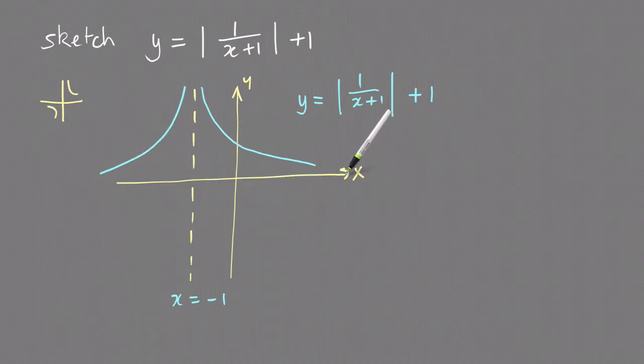So I'll do that for you now. Move the graph up 1, which means that the asymptote becomes y equals 1. It's always the number that's added at the end that is the horizontal asymptote in these types of graphs.